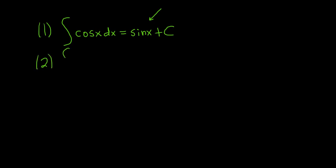The second really important formula is one for the integral of sine x with respect to x. This one is a little bit harder to memorize. If you ask yourself what is a function whose derivative is sine, well, you know that the derivative of cosine is negative sine. So what you can do is put negative cosine here, and then plus C.